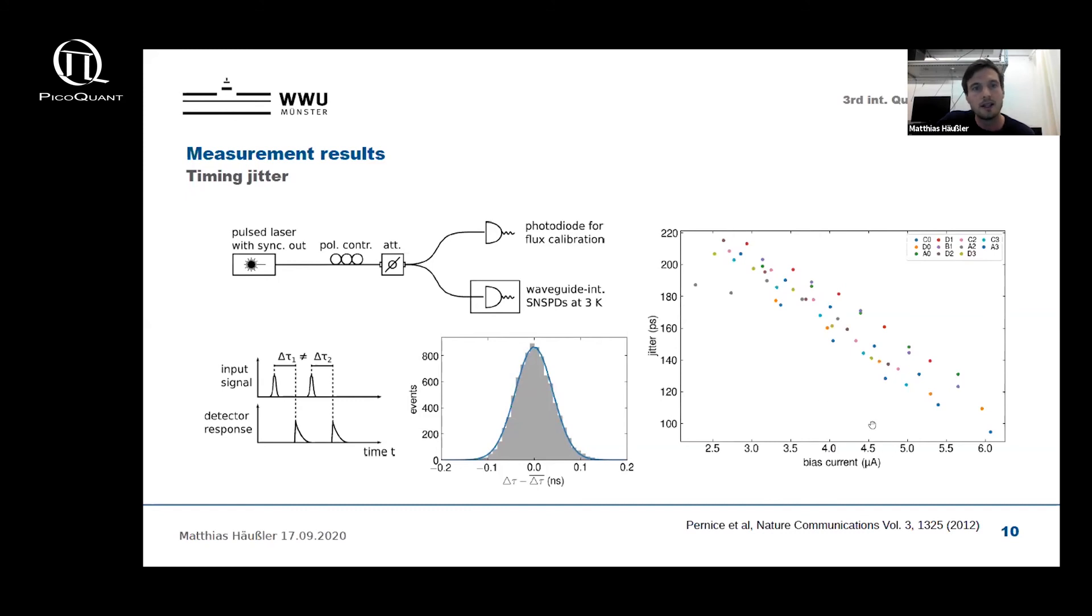We find that the jitter decreases with the bias current, which is due to the low bias currents around five microamps and the low signal to noise ratio that we have in our readout circuit. This also implies that the electronic jitter contributes most to the overall system jitter here. Nevertheless, we find jitter values down to 100 picoseconds. However, for waveguide integrated SNSPDs, jitter values down to 20 picoseconds have been found. To tackle this problem, we will in the future improve our readout circuit with cryogenic amplifiers, which we believe will reduce the jitter by a factor of at least two.